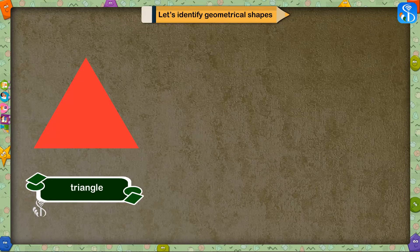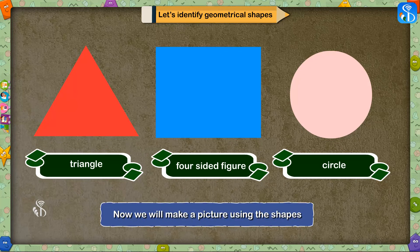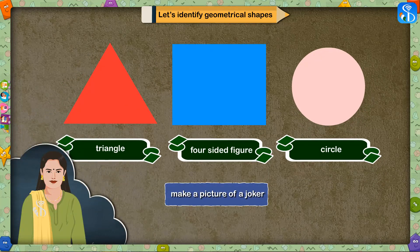Activity 4. Now we will make a picture using the shapes like triangle, four-sided figure, and circle. We can make a picture of a joker.